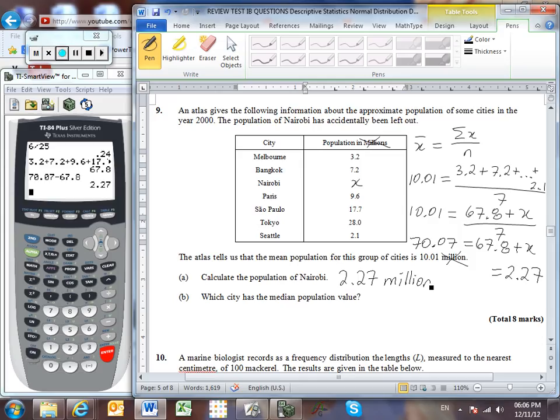Which city has the median population value? Well, that means putting all of the populations into order. So the smallest one then is Seattle. And then comes Nairobi. Then comes Melbourne. Then comes Bangkok. Then Paris. Then Sao Paulo. And then Tokyo. And I'll cross off the smallest and biggest. Smallest and biggest. Smallest and biggest. And our median population value, read the question again. It doesn't ask us for the median. It says, which city has got the median? Clearly then, that's going to be Bangkok.